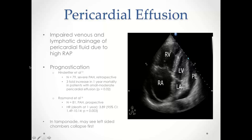Regarding pericardial effusion and prognosis: the mechanism is not clearly understood but is thought to be secondary to extremely elevated RA pressures impairing venous lymphatic drainage of pericardial fluid. A retrospective study by Hinderliter et al. (n=79 patients with severe PAH) suggested a three-fold increase in one-year mortality with even a small-to-moderate pericardial effusion. A prospective study by Raymond et al. (n=81 PAH patients) found a hazard ratio for death at one year of 3.89 — a statistically similar finding.